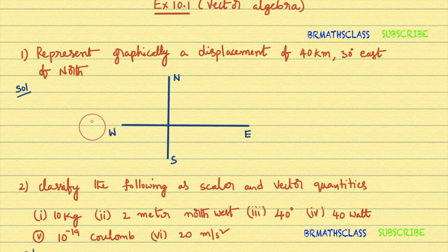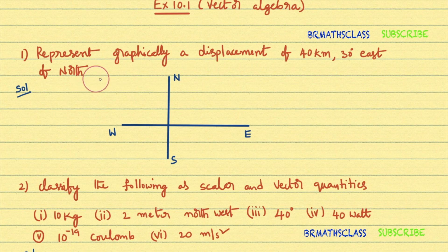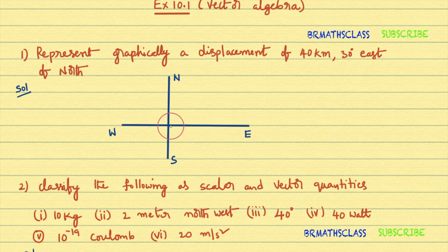First question: Represent graphically a displacement of 40 kilometers, 30 degrees east of north. We need to represent a vector graphically — the displacement is 40 kilometers and the direction is 30 degrees east of north. The magnitude is given and the direction is also given, so first I will draw a vector having magnitude 40 kilometers.